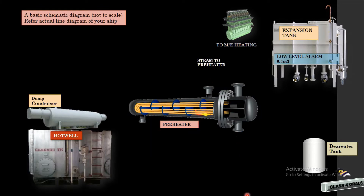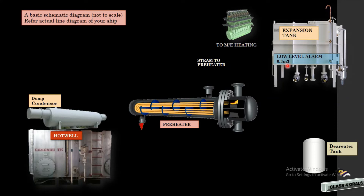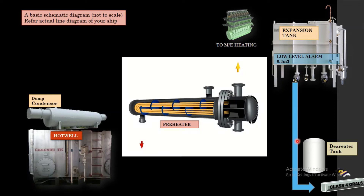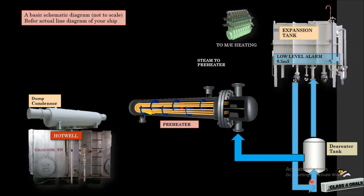Here you can see a basic schematic diagram — please refer to the actual line diagram of your ship. On the right, you can see the expansion tank with low level alarm at 0.3 cubic meters. Here you can see the main engine heating and the preheater. Here you can see the cascade tank provided with the dump condenser, and this is the de-aerator tank. From the expansion tank, water goes to the de-aerator and back. From the de-aerator, a line of jacket cooling water goes to the inlet of the preheater, which goes to the main engine heating.